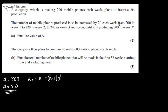We're told now that 600 is the number of mobile phones produced in week N. So we'll have 600 equals 200 plus N minus 1 multiplied by the common difference of 20.